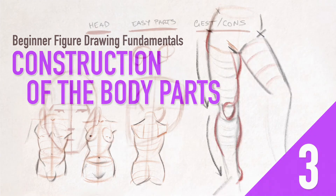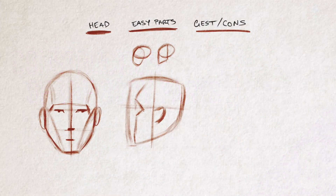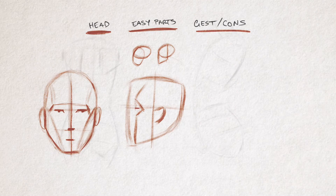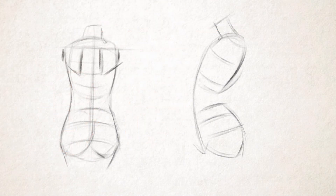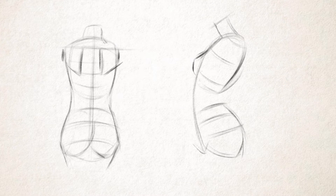We've broken down the concepts of gesture and construction, we've figured out how to position things, we know how to twist things, and now it's time to start putting this information together.